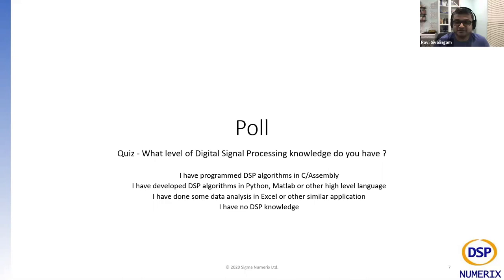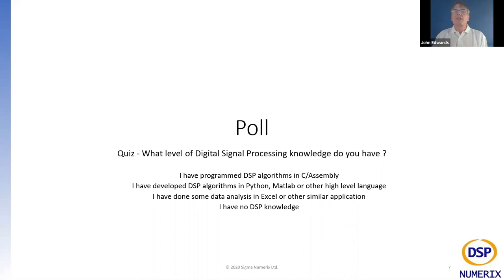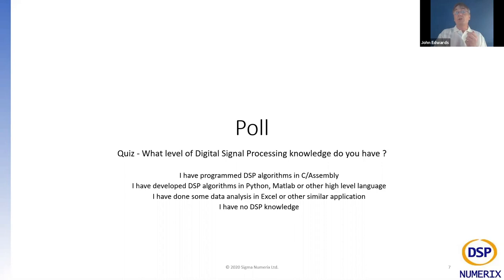John notes those results are interesting and similar to a previous UK science industry group audience. Around 50% have coded in C, assembly, Python, MATLAB, and so on. He then outlines the talk structure: starting with the motivation behind the project, then the algorithmic details and results, and finishing with a demo. The project scope was to detect a number of different vibration modes for a rotating machine and implement those algorithms on a very low-cost embedded CPU, with a scalable solution supporting a large number of deployments.